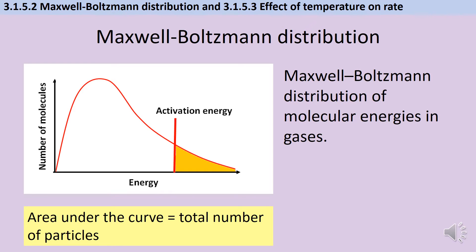We can use a graph called a Maxwell-Boltzmann distribution which shows how much energy the different particles have to say what proportion of the particles do have sufficient energy to react when they collide and what proportion don't.